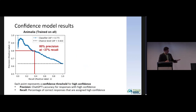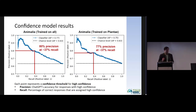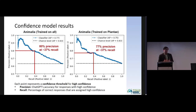For these examples, we trained our confidence model on all of the responses in our test set. But if we only train it on a subset — for example, only on questions about plants — we can see that the model actually generalizes. Training only on plant data and testing on animal data yielded pretty similar performance; we only lost about three percent precision at the same recall.